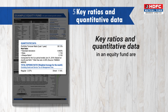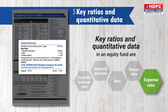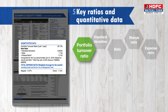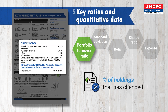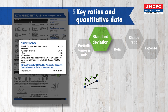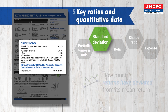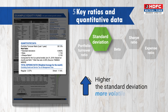The key ratios and quantitative data in an equity fund are portfolio turnover ratio, standard deviation, beta, Sharpe ratio and expense ratio. Portfolio turnover ratio signifies the percentage of a scheme's holdings that has changed during a year — it is a measure of the scheme's trading activity. Standard deviation tells us how much a scheme's returns have deviated from its mean return. Higher the standard deviation, more volatile the scheme is, and vice versa.